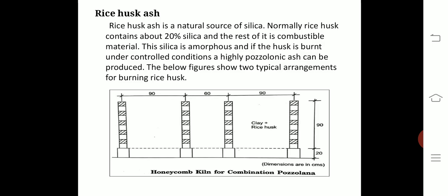Let us study rice husk ash. Rice husk ash is a natural source of silica. Normally rice husk contains about 20% silica and the rest is combustible material which burns off. This silica is amorphous, and if the husk is burnt under controlled conditions, a highly pozzolanic ash can be produced. You can see the figure which shows a typical arrangement of burning rice husk ash. There are two different methods: the honeycomb kiln and the tube-in-basket burner.